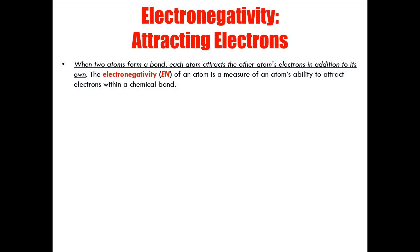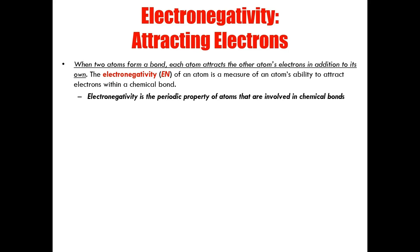As I mentioned, the electronegativity of an atom, symbolized by the capital letters EN, is a measure of the atom's ability to attract electrons within a chemical bond. When two atoms form a bond, each atom attracts the other atom's electrons in addition to its own. For this reason, electronegativity is considered the defining periodic property of atoms that are involved in chemical bonds.